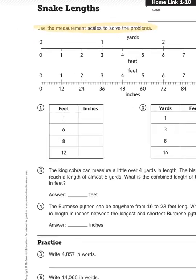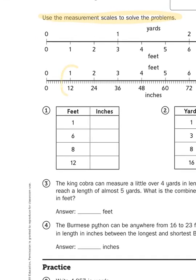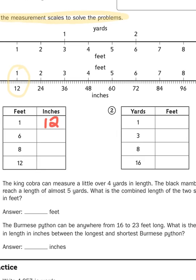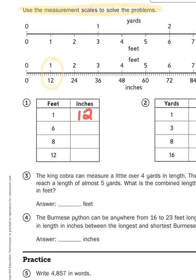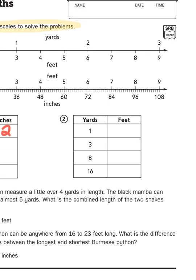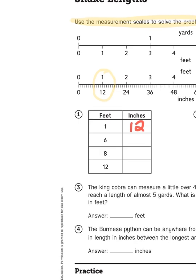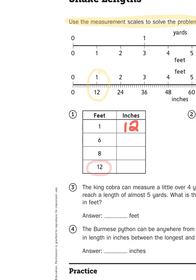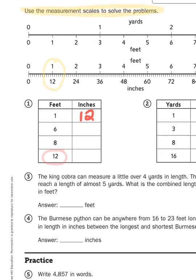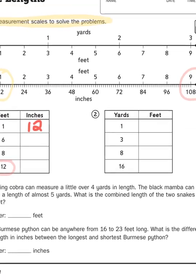So for every one foot, for example, you would have 12 inches, so you can use the number line to help you solve these questions up to a point, because you'll notice that the number line for feet to inches only goes to 9. So what do you do when you get to 12?